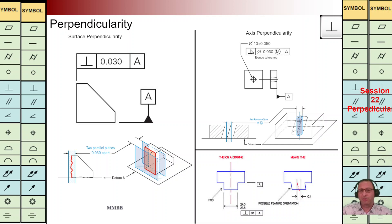At top right we have another example. We implement the perpendicularity symbol with the diameter symbol, the value of Tz, and a modifier. The axis of this hole should be perpendicular to datum A. This means we are going to have a cylinder with a diameter of 0.03, and the axis of this hole should be within that cylindrical volume.